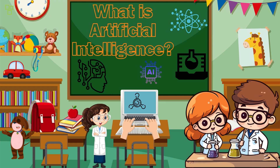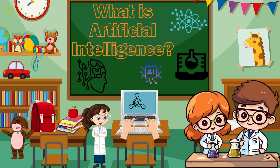What is artificial intelligence? First things first, what exactly is artificial intelligence? Artificial intelligence, or AI, refers to the development of computer systems that can perform tasks that typically require human intelligence.